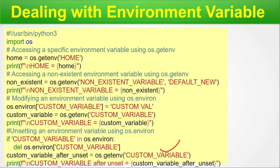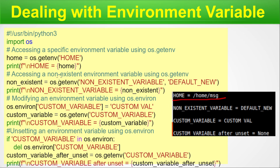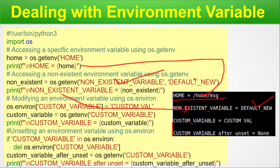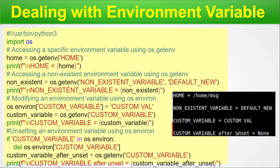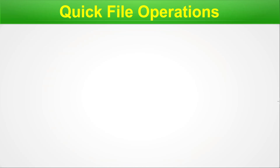After the delete operation we access the custom variable again and print it — it now contains None, meaning it has been emptied. So the output shows: home value accessed, non-existent variable returning its default, custom variable showing 'custom_value' before deletion, and None after deletion. Download this code from the GitHub link and try it out with multiple variables to learn to control environment variables using Python.